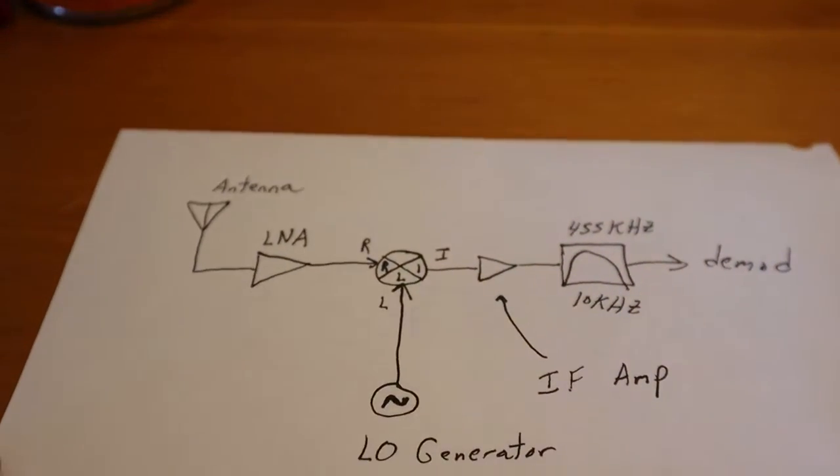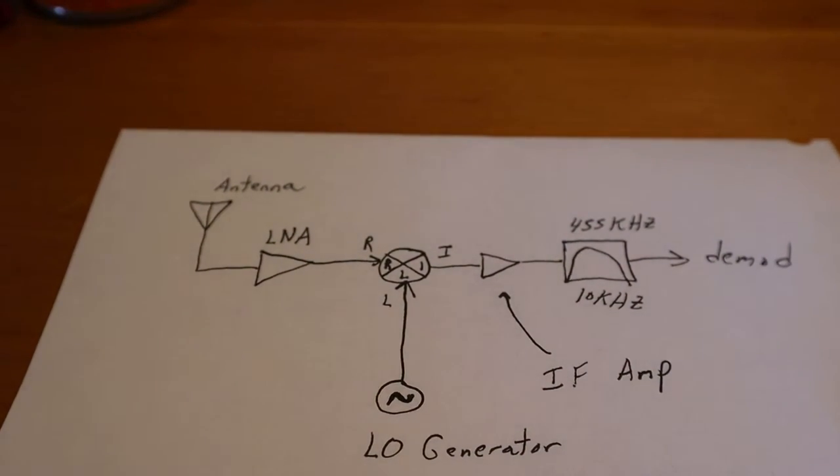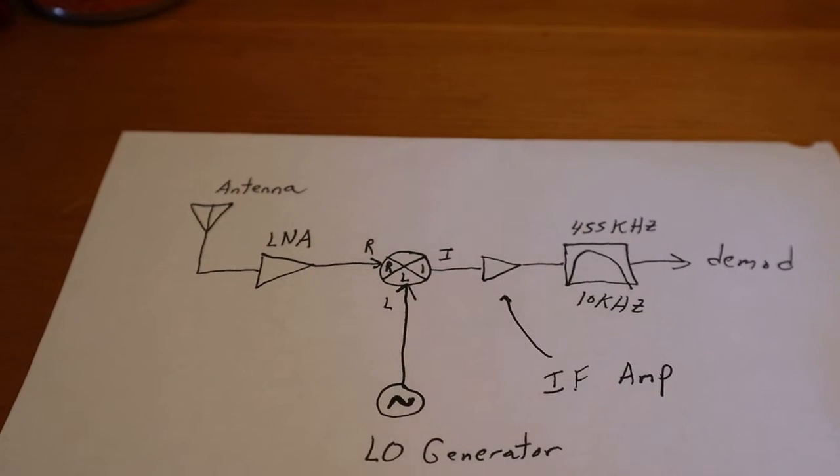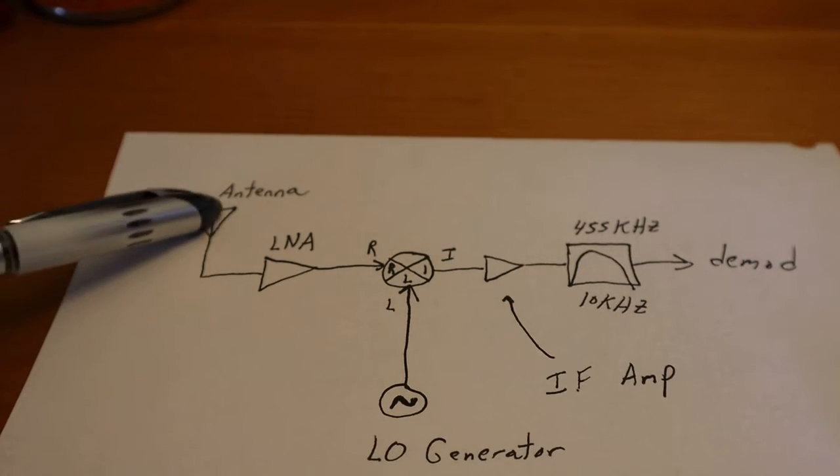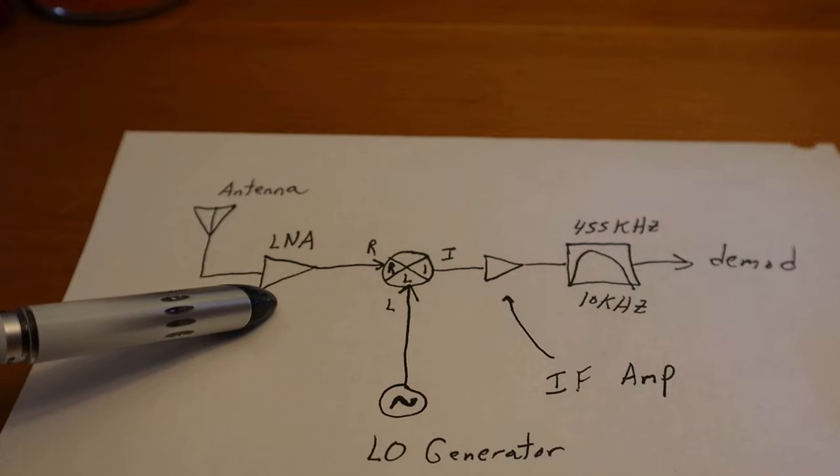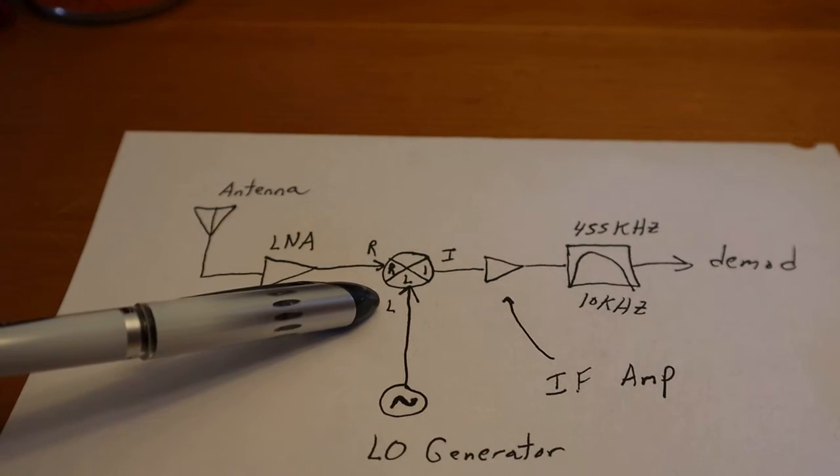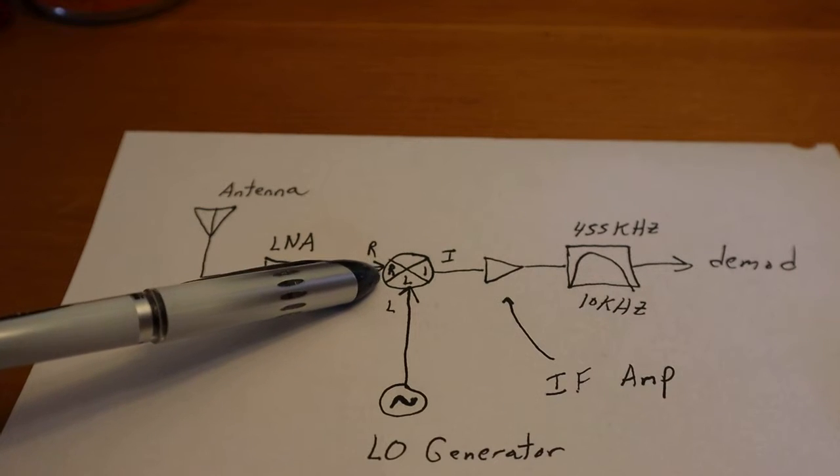So here's how we put the whole idea together. And really we have to thank Armstrong for this because it's amazing. This architecture is still used today. So the idea here is we have some antenna, loop antenna, whatever, comes into a low noise amplifier to amplify the signal.